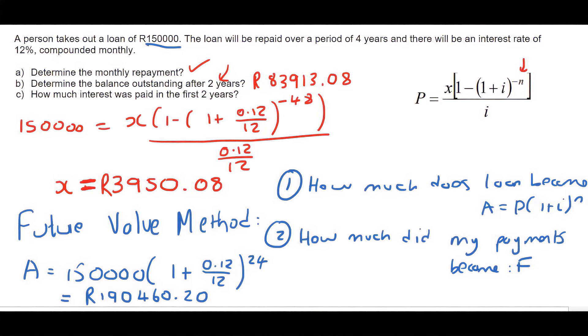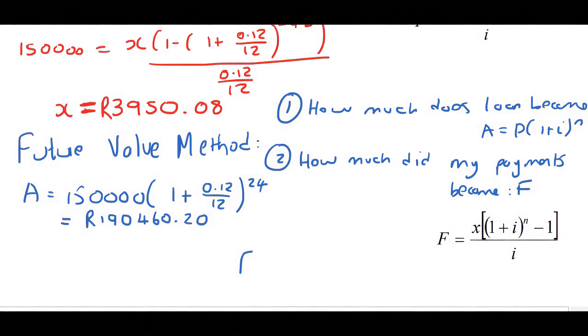Now, we also need to know how much did my payments become after two years. So we're going to use the future value formula. And so we know that our monthly payment is 3,950.08.